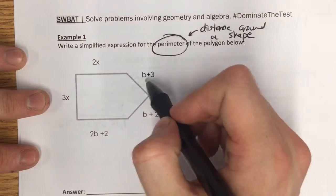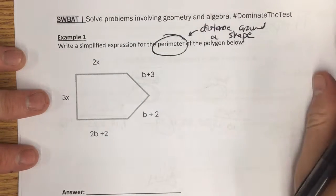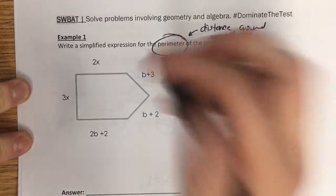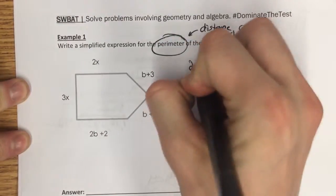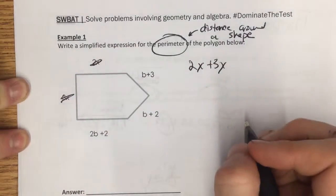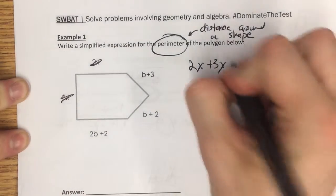But I've got some variables and some constants, so I need to combine like terms as well. So let's first figure out what we can combine. I'm adding all these up, so I've got 2x, I've got 3x, and that's all my x's.